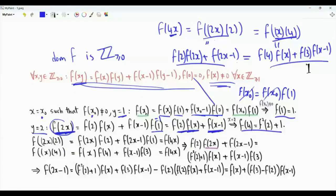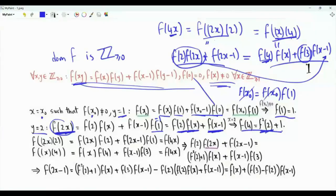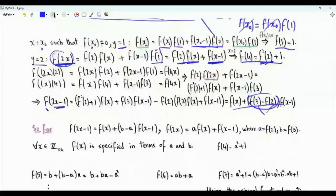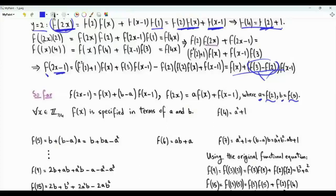These two quantities are equal. Moving f(2) times f(2x) to the right-hand side gives an expression for f(2x-1). In that expression we have f(3) and f(4), which is 1 plus f(2) squared. Our expression for f(2x-1) can be written in terms of f(2) and f(3). Specifically, f(2x-1) is f(x) plus f(x-1) multiplied by (f(3) minus f(2)). So f(2x) and f(2x-1) are both linear combinations of f(x) and f(x-1).